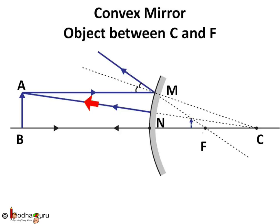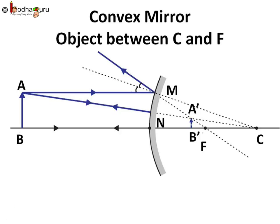AN and CN will be on the same straight line. So if we extend the reflected ray backwards, they would meet at virtual point A', the image of the point. So A'B' is the virtual image of AB. It is upright and smaller than the real object AB, so it's a diminished image.